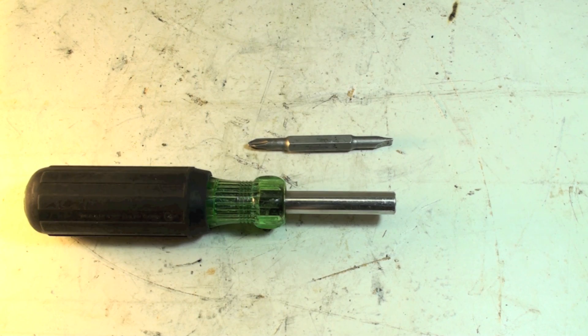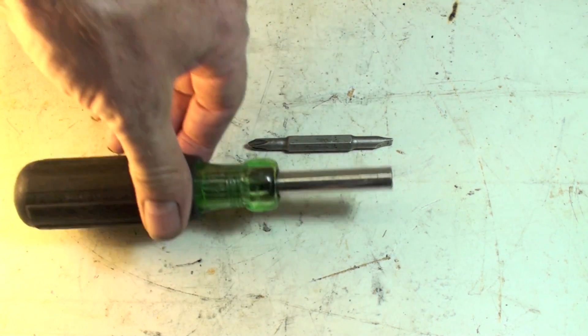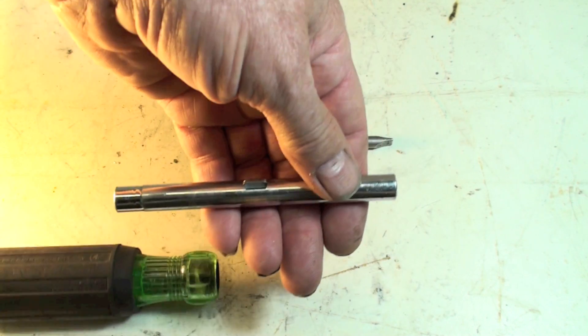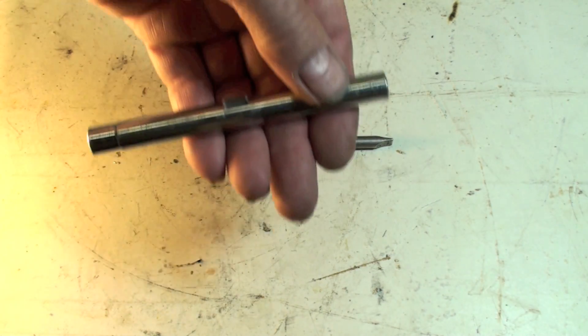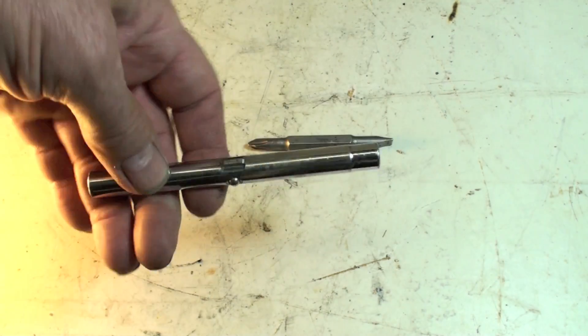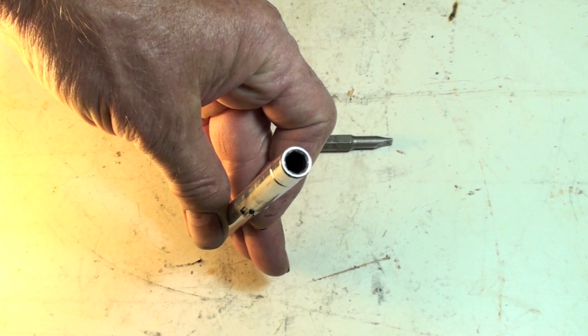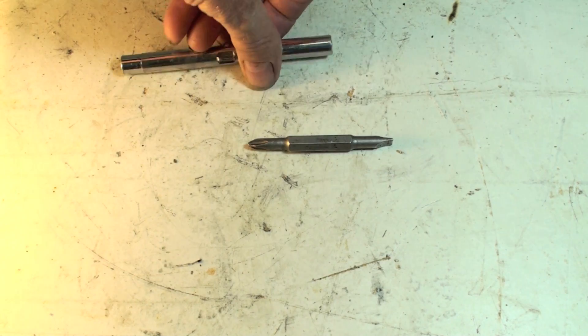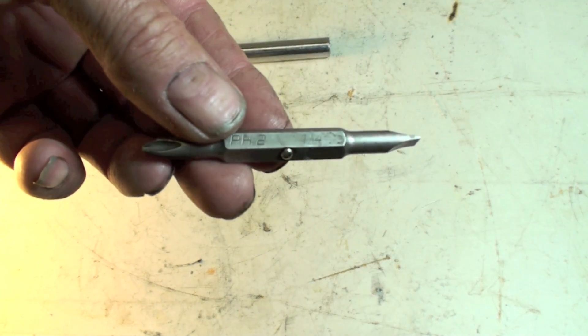But the key with this thing is you've got two different drivers here. You can reverse this, and this one's quarter inch. You can use this quarter inch driver, five sixteenths driver, number two Phillips, and a quarter inch slot.